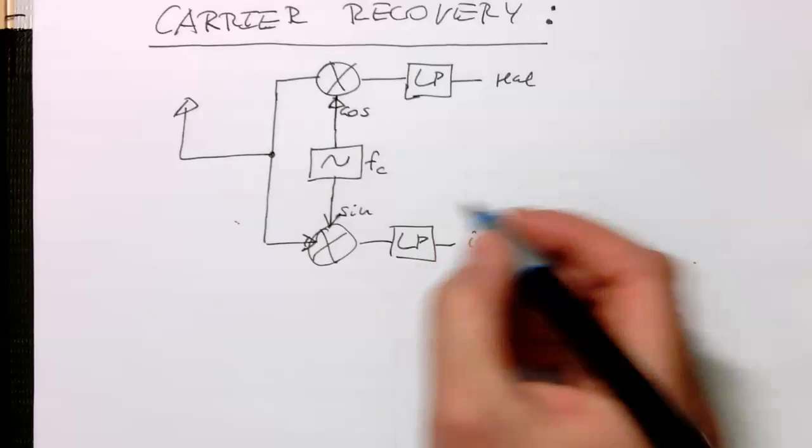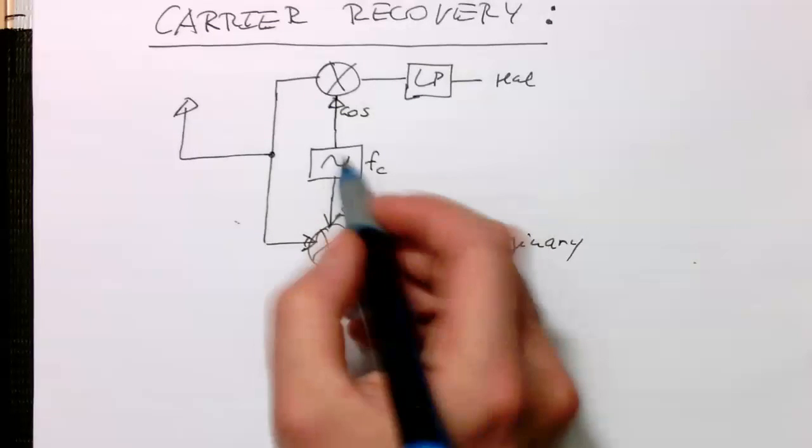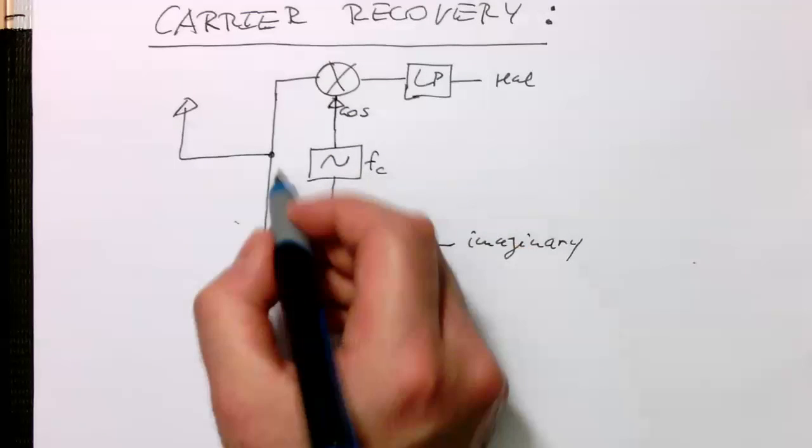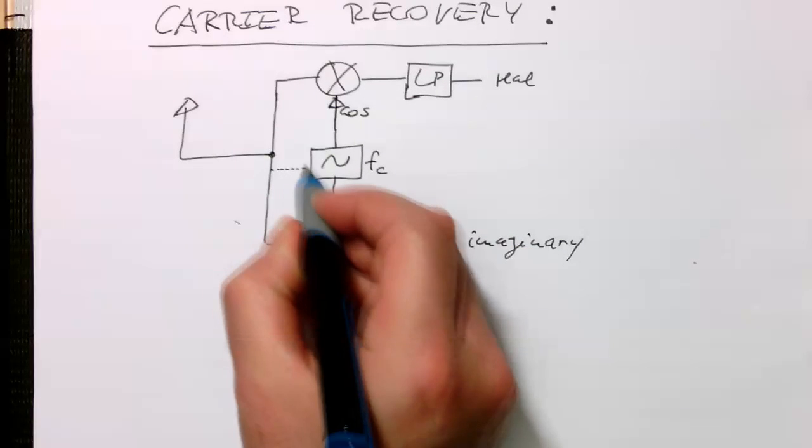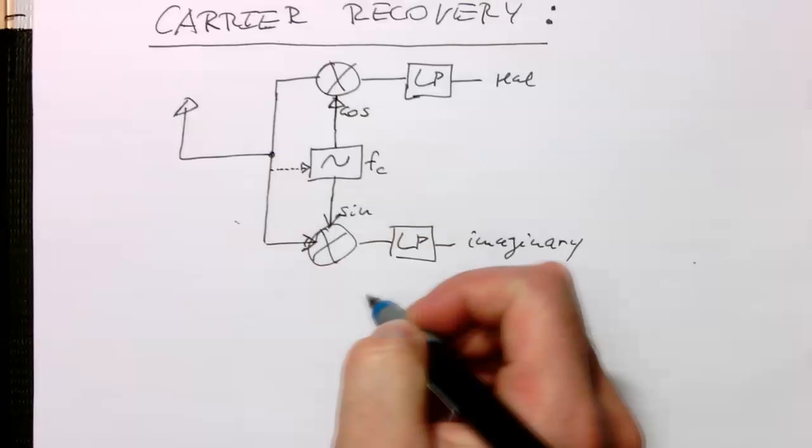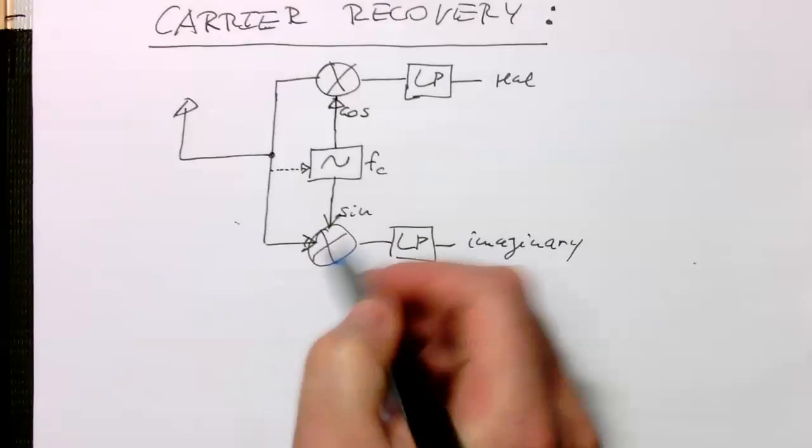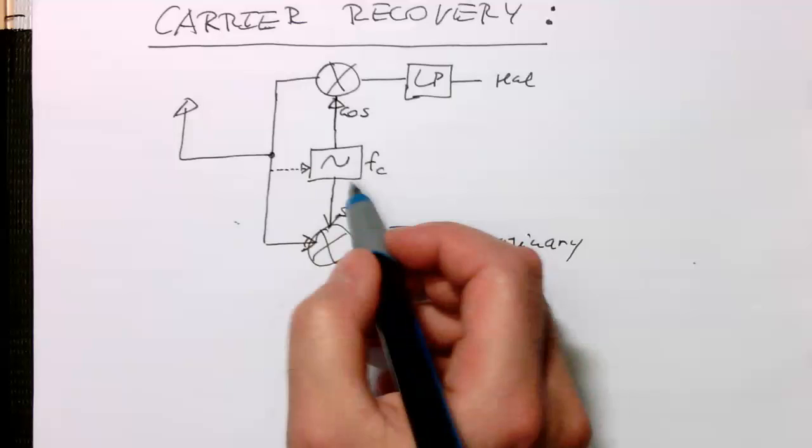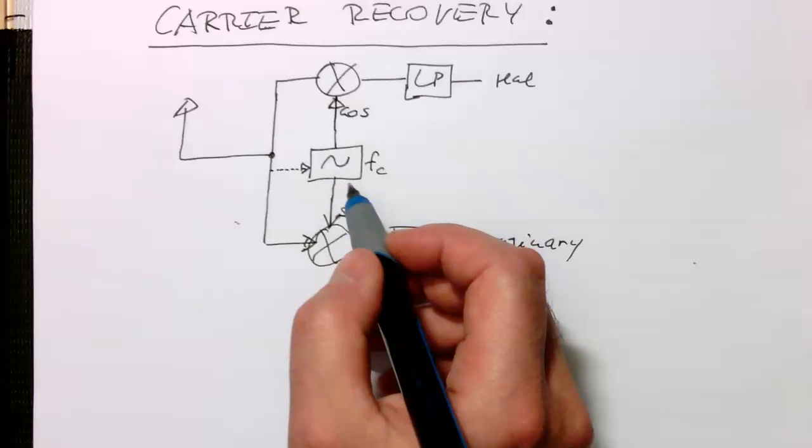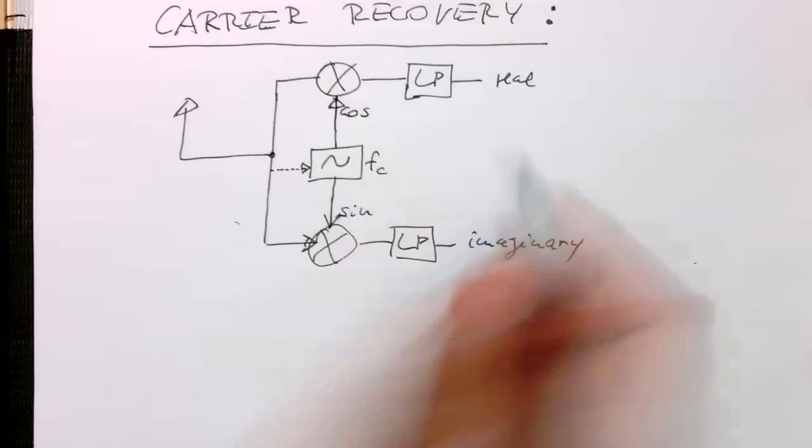So this oscillator needs to be somehow driven also by some information coming from this area, so that this fc. This oscillator here is in total sync to the oscillator on the transmitter side.